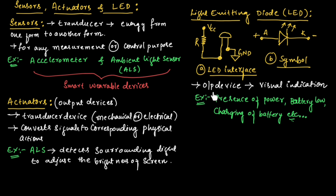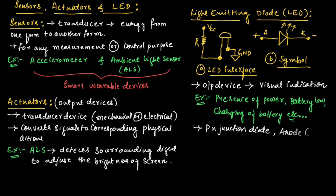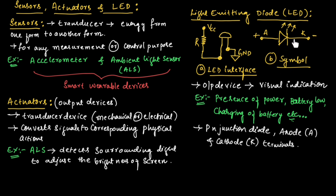LED is a very important output device used for visual indication in any embedded system. LED is a P-N junction diode which consists of an anode, indicated by A, and a cathode, indicated by K. Figure B represents the symbol of LED, showing these two terminals — anode and cathode.